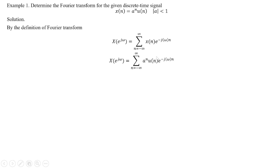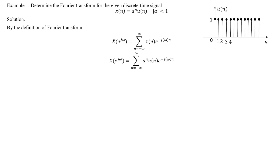This is the discrete time unit step signal. Because of u(n), we change the summation limits from 0 to infinity instead of minus infinity to plus infinity.